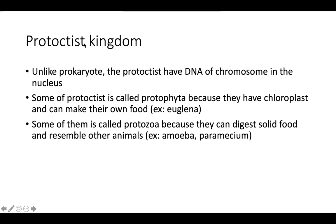The last kingdom is the protoctist kingdom. Unlike prokaryotes, protoctists have their DNA of chromosomes present inside the nucleus. Some protoctists are called protophyta because they have chloroplasts and can make their own food through photosynthesis — for example, Euglena. Others are called protozoa because they digest solid food like animals — examples include amoeba and paramecium.